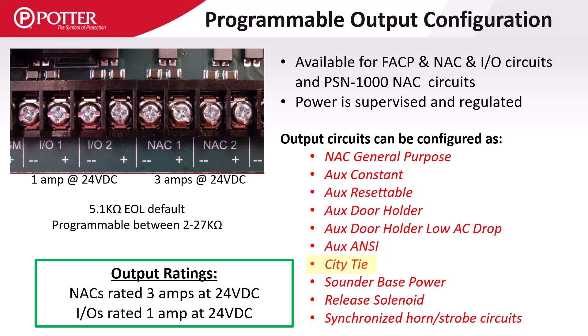The city tie output provides connection to municipal boxes. Sounder base power is the specialized power output for sounder bases only. This power circuit will pulse on and off in a temporal 3 or temporal 4 pattern to provide signaling for either fire or CO alarms. The pulsing characteristics of this circuit make it unsuitable for use with other devices.